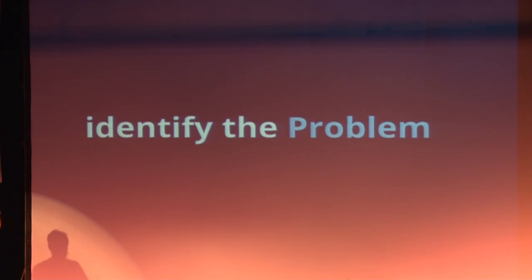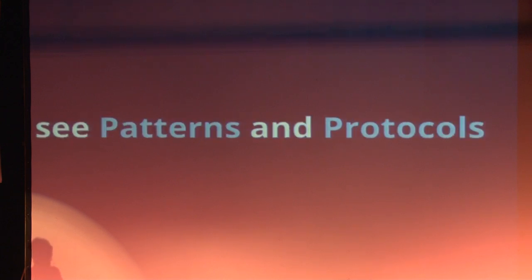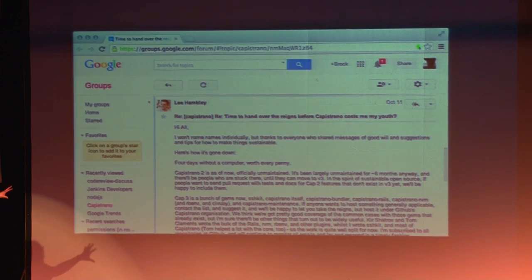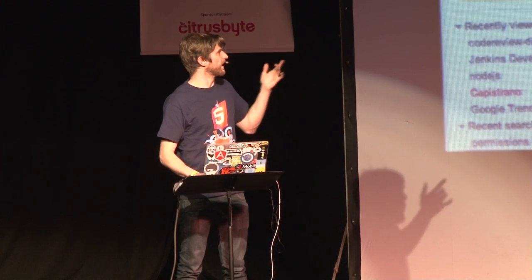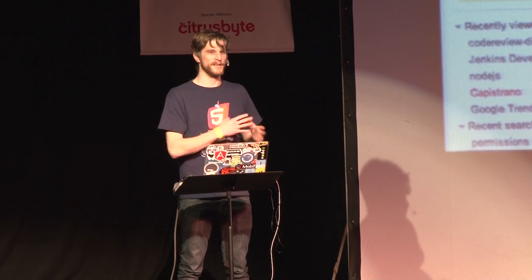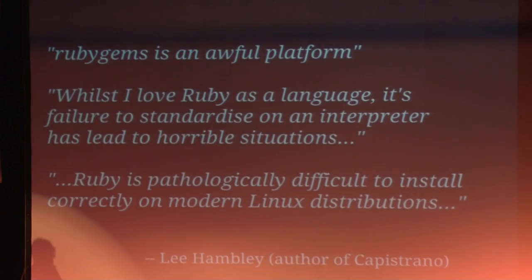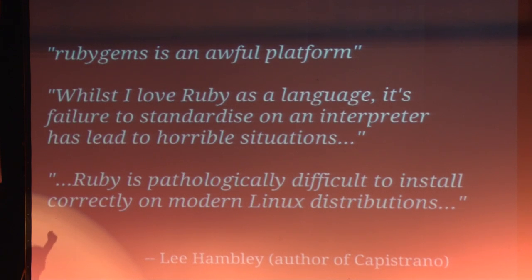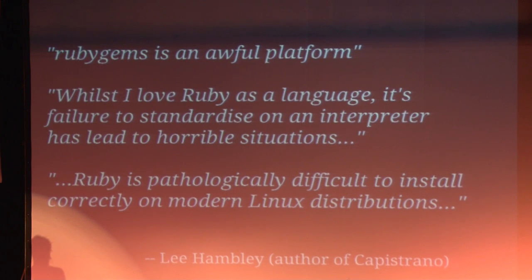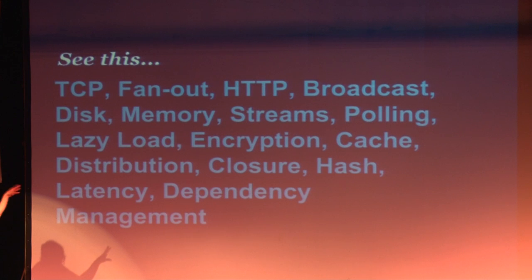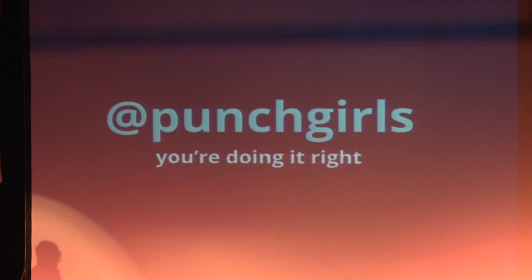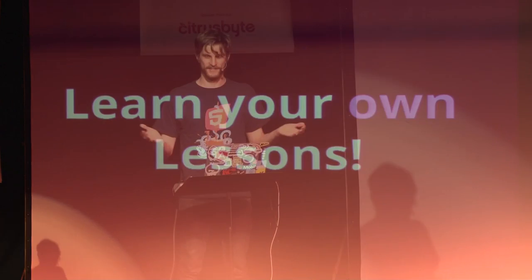In summary, my suggestion is to identify the problem and see the patterns and protocols, not the tools and the frameworks. I encourage you all to read this post from the author of Capistrano — he's talking about how Capistrano is being used and he's having troubles maintaining it, because he doesn't even think Capistrano is relevant the same way it has been. It gives insight into how people associate problems with these tools rather than identifying the problem itself and finding the most elegant way to solve it. So don't see this — see this. Identify the problem, build and find the right tool. You're doing it right when you learn your own lessons. Thank you.